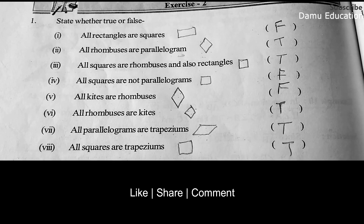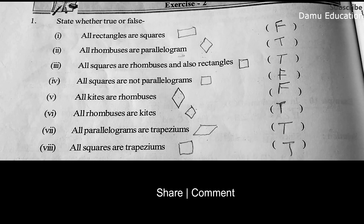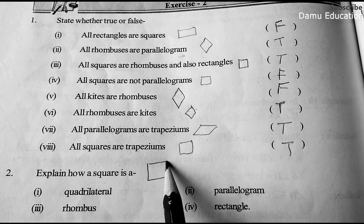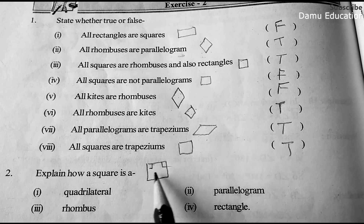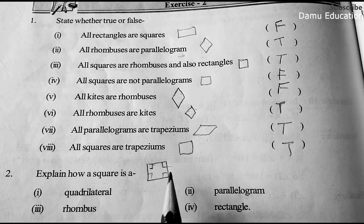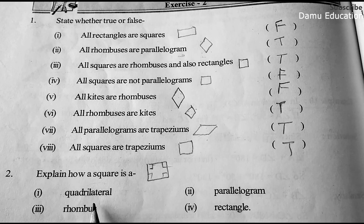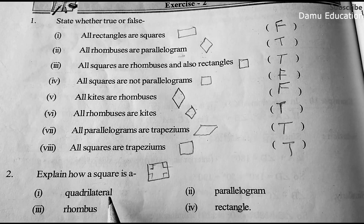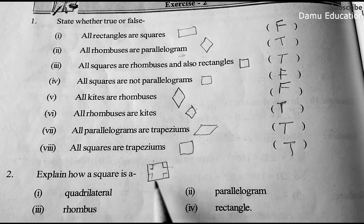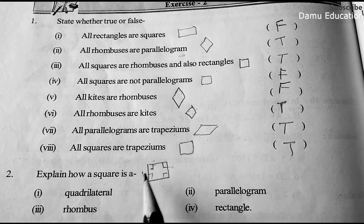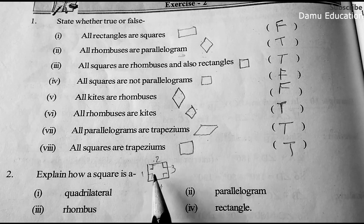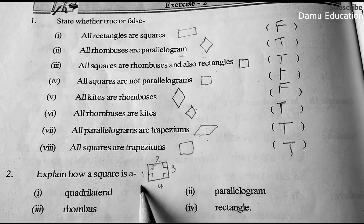The second question is: explain how a square is a quadrilateral, parallelogram, rhombus, and rectangle. In order to call any shape a quadrilateral, it must contain four sides and four angles. A square has four sides and four angles, so a square is a quadrilateral.